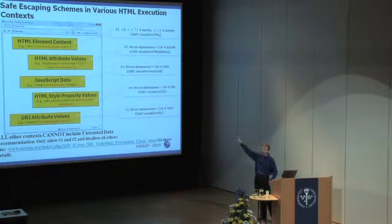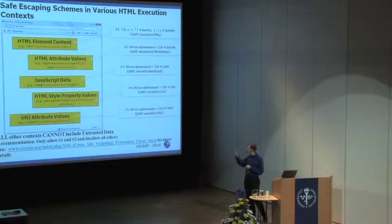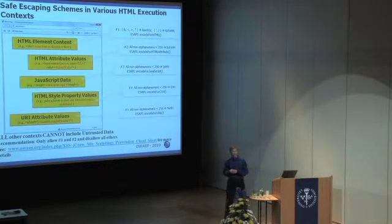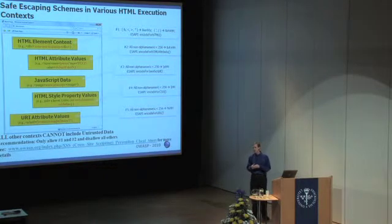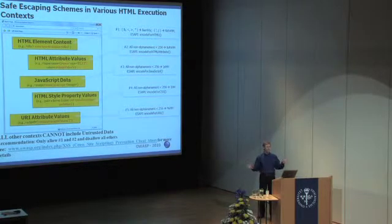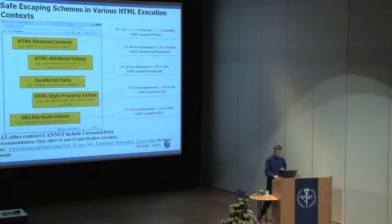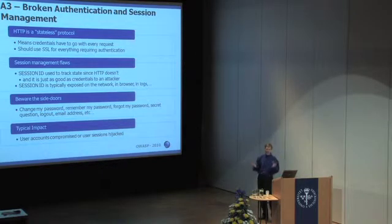The cheat sheet defines the five contexts a developer needs to recognize and tells you which encoder to use in each, and we provide methods in ESAPI — the Enterprise Security API — for doing that encoding. If you're not familiar with the ESAPI project, I would strongly encourage you to look at it. It's an OWASP project to provide standard security controls that are easy to use for developers in multiple languages: PHP, .NET, Java, and others.